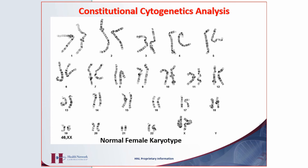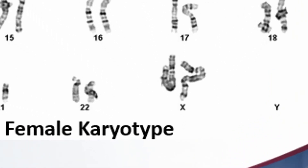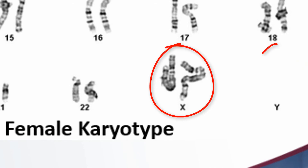This is a normal female karyotype. You know that because it has two X's and no Y's — you can see the Y slot is empty. Normal female.